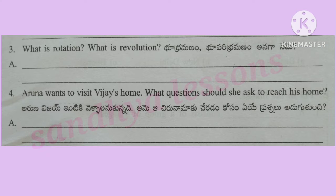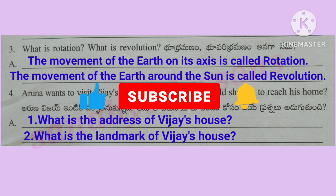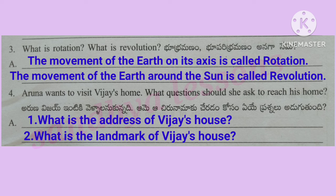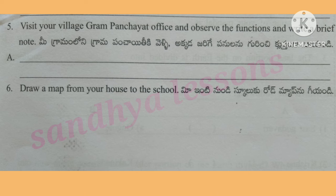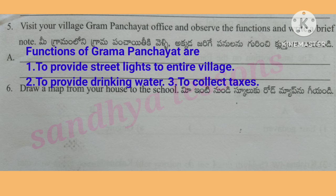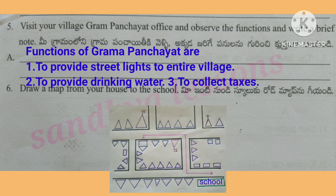Question 3: What is rotation? What is revolution? The movement of the earth on its axis is called rotation. The movement of the earth around the sun is called revolution. Question 4: Aruna wants to visit Vijay's home. What questions should she ask? What is the address of Vijay's house? What is the landmark of Vijay's house? Question 5: Visit your village Gram Panchayat office and observe the functions. Functions of Gram Panchayat are: to provide streetlights to the entire village, to provide drinking water, and to collect taxes.